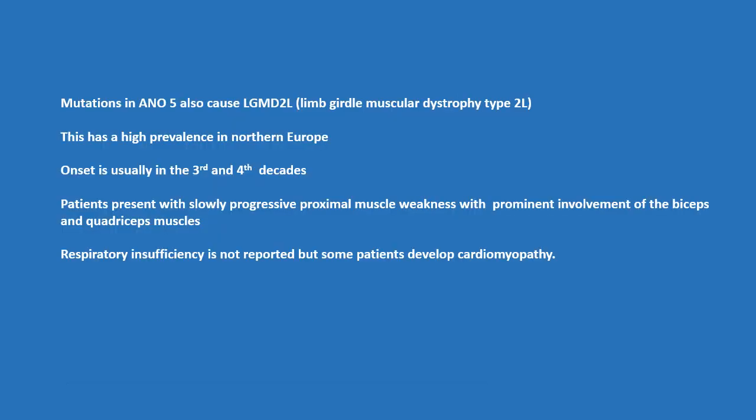Mutations in ANO5 also cause LGMD2L, or limb girdle muscular dystrophy type 2L. This has a high prevalence in northern Europe. Onset is usually in the third and fourth decades. Patients present with slowly progressive proximal muscle weakness with prominent involvement of the biceps and quadriceps muscles. Respiratory insufficiency is not reported, but some patients develop cardiomyopathy.